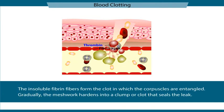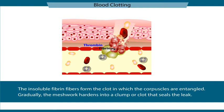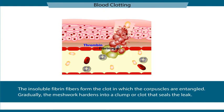The insoluble fibrin fibers form the clot in which the corpuscles are entangled. Gradually, the meshwork hardens into a clump or clot that seals the leak.